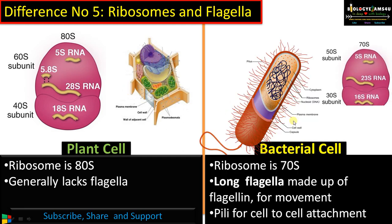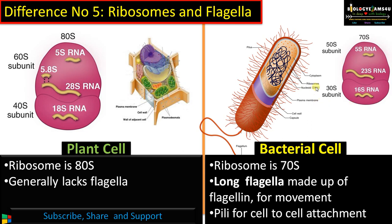Whereas in the case of bacteria, the ribosome is 70S, made up of a 30S small subunit and a 50S large subunit. Bacteria have long flagella made up of a protein called flagellin, which are involved in movement. There are also short hair-like structures projecting from the surface called pili or fimbriae, which are used for cell-to-cell and cell-to-surface attachment. If a pilus is involved in conjugation, it is called a sex pilus.